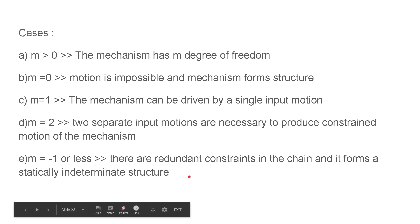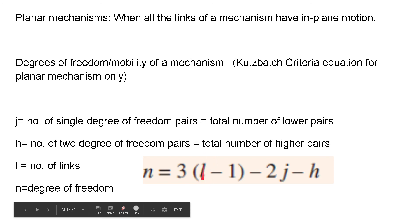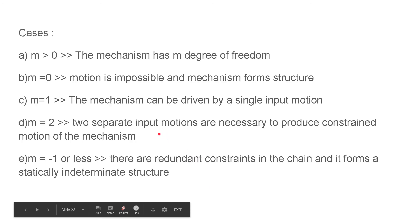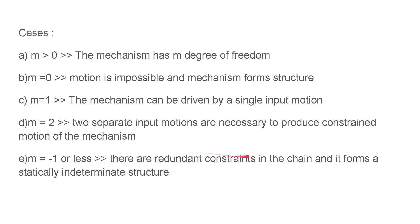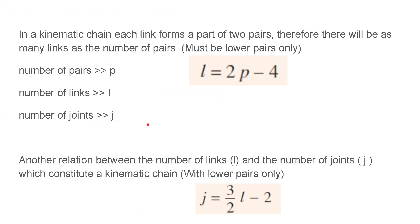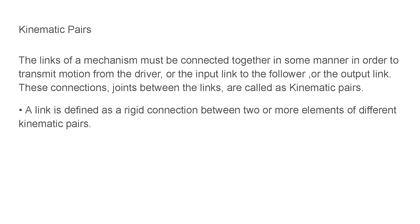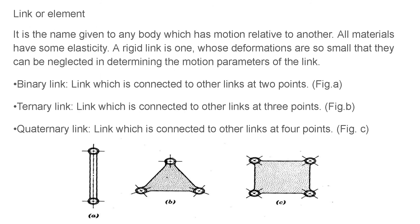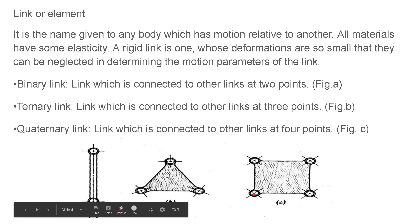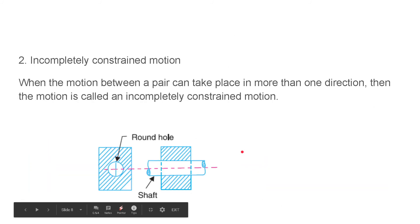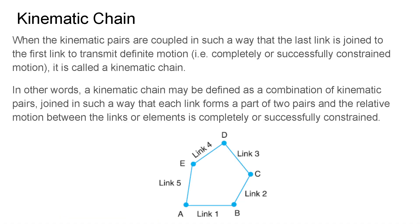When m equals −1 or is a negative number, there are redundant constraints in the chain and it forms a statically indeterminate structure. We have more links than joints and higher pairs can account for, so we can remove some links. For example, if we have four joints and four links and add another link connecting two joints, it cannot move in any way. Adding yet another link gives six links and four joints — a redundant, truss-like structure with negative degrees of freedom.